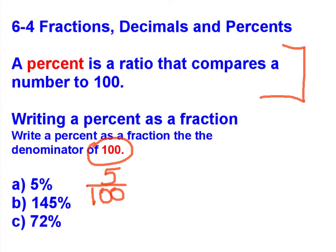So I'm going to divide each of these by 5. 5 divided by 5 is 1. 100 divided by 5 is 20. So I can say that 5% is equal to 1 over 20. And that's how I would write that percent as a fraction.